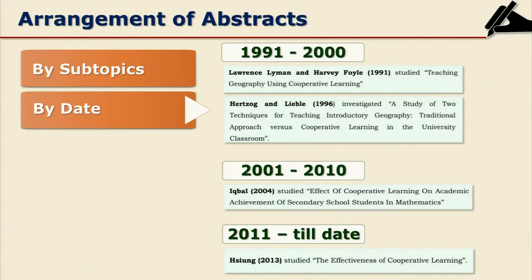Thus abstracts of recent articles should precede those of earlier old articles. You can divide the dates into two or three segments, for example articles from 1991 to 2000, articles from 2001 to 2010, and articles from 2011 till date. This will be date-wise arrangement of topics wherein you want to underline the development of the topic.